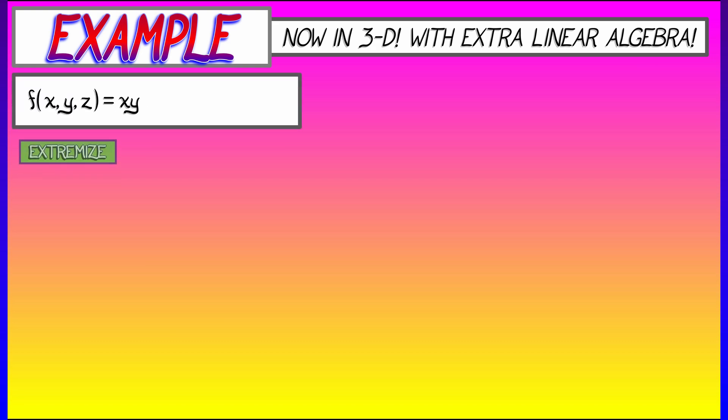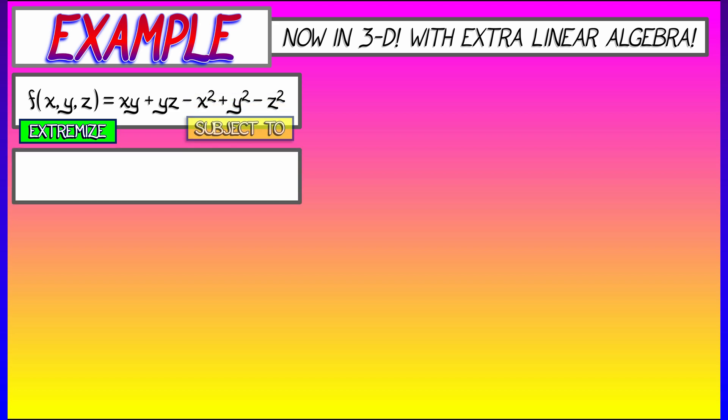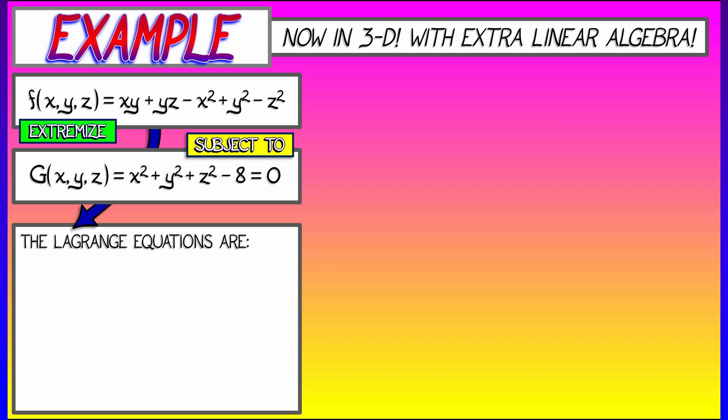Let's say that we have three variables now, x, y, and z. And what I want to do is extremize a function, a quadratic function: xy + yz - x² + y² - z². And what we want is that x² + y² + z² = 8. That is, these points have to lie on a sphere about the origin of radius square root of 8. Okay, let's do the Lagrange equations.